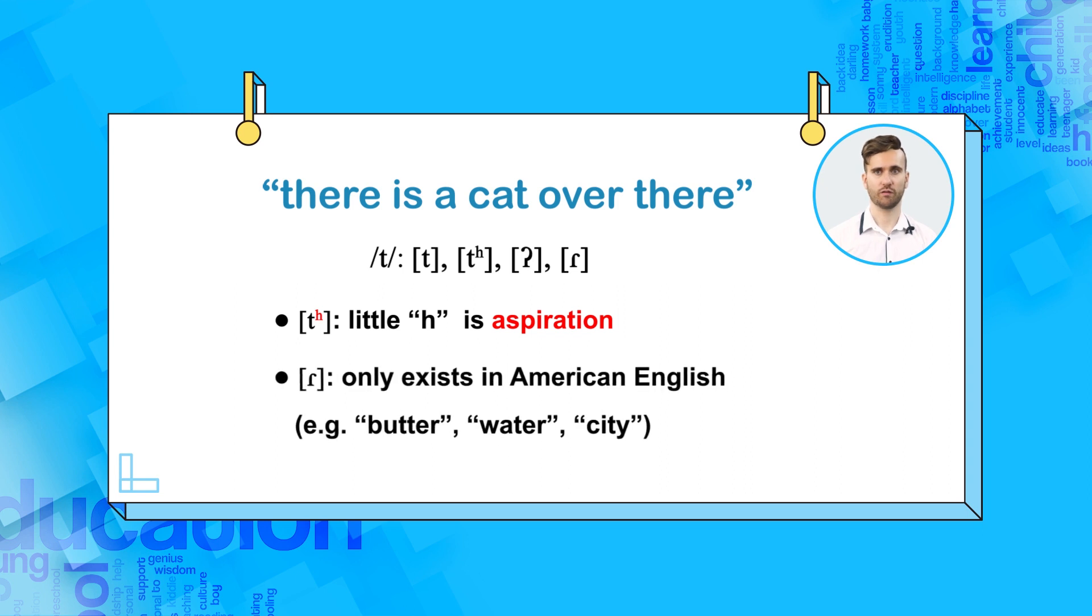The fourth allophone only exists in American English. It is more like a soft d than a t. If you have a native-like American accent, then you say this sound regularly. If not, then listen to some American TV shows or movies, and you'll hear it in words like butter, water, and city.